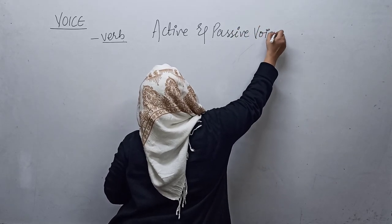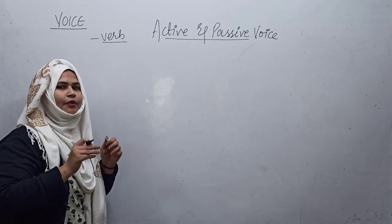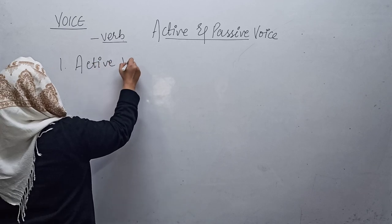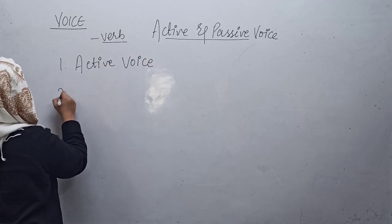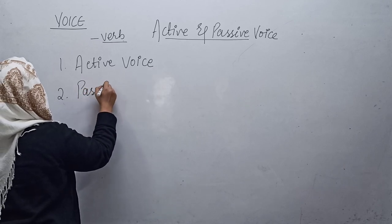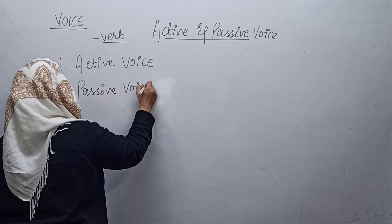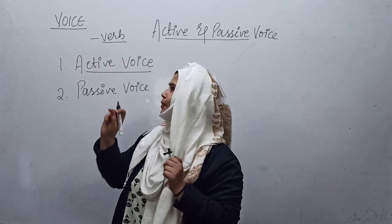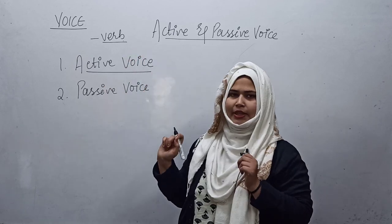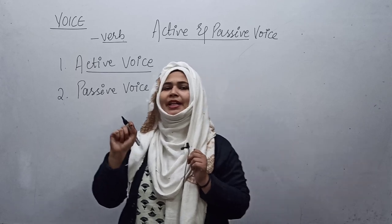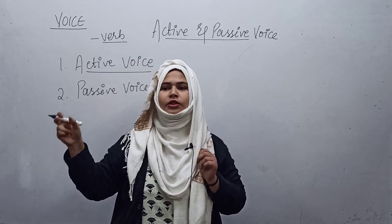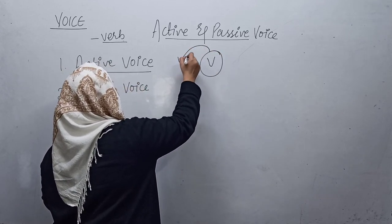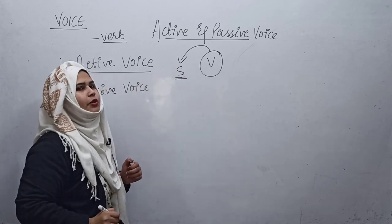In voices, there are two terms we have to understand very clearly. The first is active voice and the second is passive voice. When I say active voice, it means that the subject is of utmost importance — the verb is giving utmost importance to the subject.